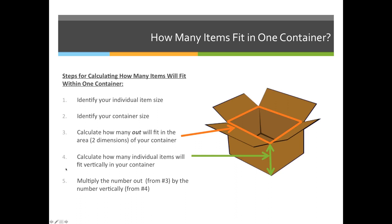Second to last, once we know how many books fit on the bottom of the box, we need to know how many will fit tall in the box. So if we have 4 on the bottom and we can fit 4 rows tall, then in step 5 we calculate that 4 across the bottom times 4 rows equals 16 books fitting in one box.